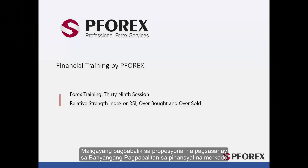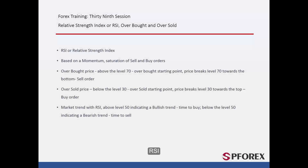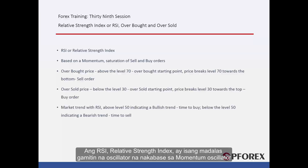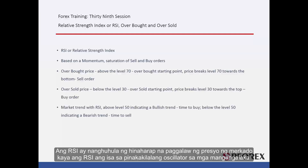Welcome back to Forex Professional Training in Financial Markets. RSI, Overbought and Oversold will be studied in this session. RSI, or Relative Strength Index, is a widespread momentum oscillator. RSI indicates the saturation of buying or selling in the market and predicts future movements of market price. Thus, RSI is one of the most popular oscillators among traders.